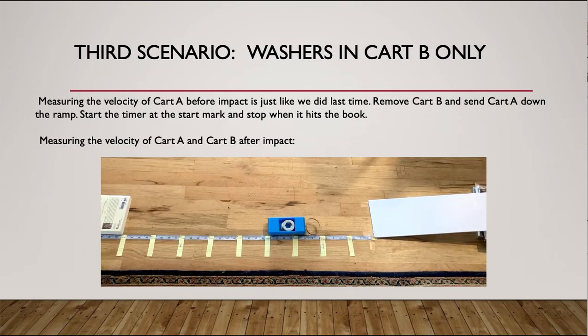All right. And then now we're moving on to washers in cart B only. Same thing. Cart A before the collision is just like we've been doing it. Remove cart B, run cart A, figure out how fast it's going.